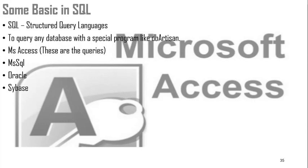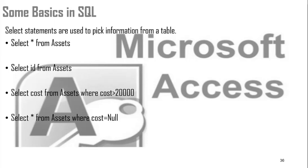For example, here are some basics in SQL — select statements, used to pick information from a table. You can SELECT * FROM assets — when you pass this query, it will return all rows and columns in the asset table. When you SELECT ID FROM assets, it returns the ID column. When you SELECT cost FROM assets WHERE cost is greater than 20,000, it brings up all assets whose cost is greater than 20,000, but only the cost column. SELECT * FROM assets WHERE cost IS NULL will bring all assets with empty fields in the cost column.